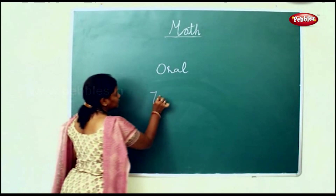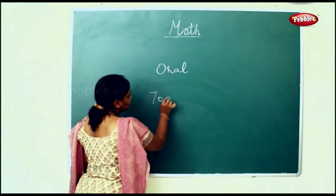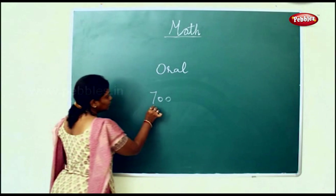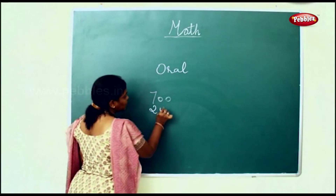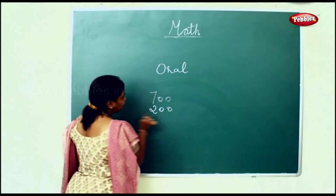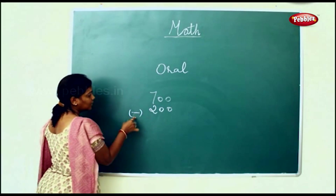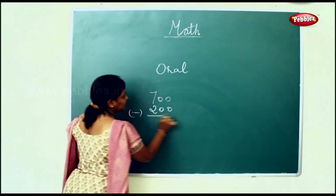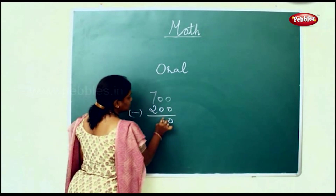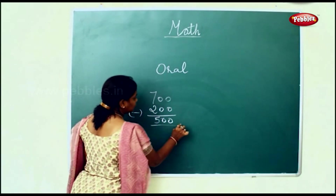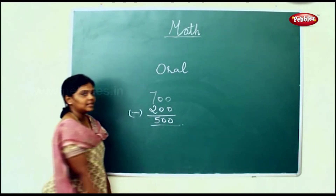700 lemons were bought to make pickle. After this, 200 were used. We'll have to find the remaining or the left out. So we'll do a minus. The remaining or the left out will be 500 lemons.